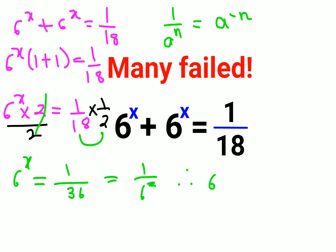So now therefore I can say 6 raised to x equals to 6 raised to minus 2. So that gets you basically value of x comes out to be minus 2.